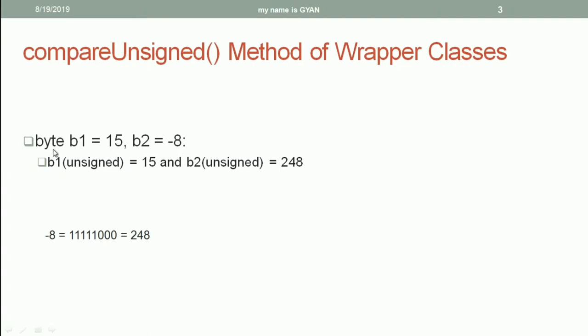Let's check this example. The byte b1 is equal to 15 and byte b2 is equal to minus 8. The binary of b1 when treated in signed way will be 15 and the same binary of b1 when treated in unsigned way will again be 15.